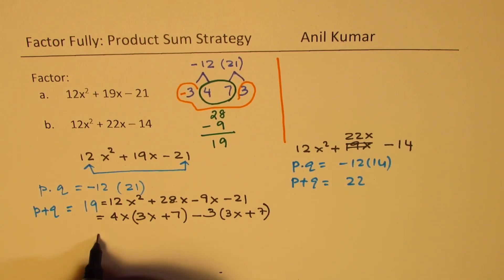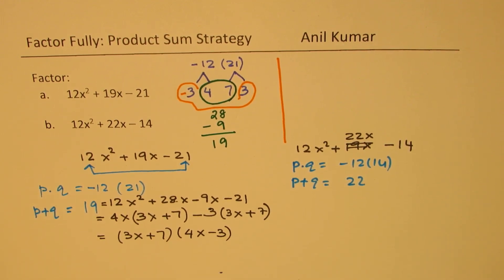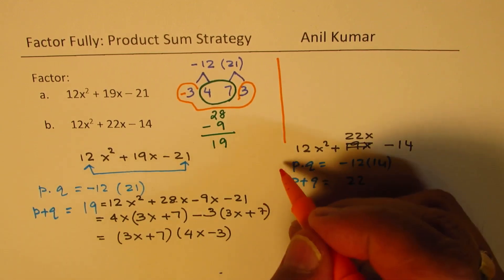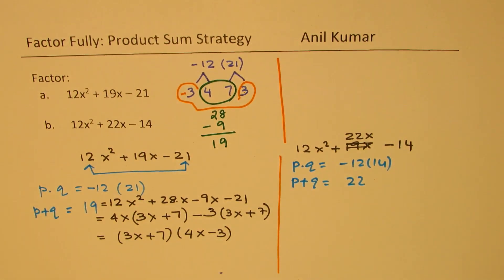Now 3x + 7 is a common factor. And we get 4x - 3 as a result. Do you see that part? So that is how you could factor this. So I was emphasizing on this particular strategy. So factoring the terms rather than multiplying and then figuring out is actually simpler.